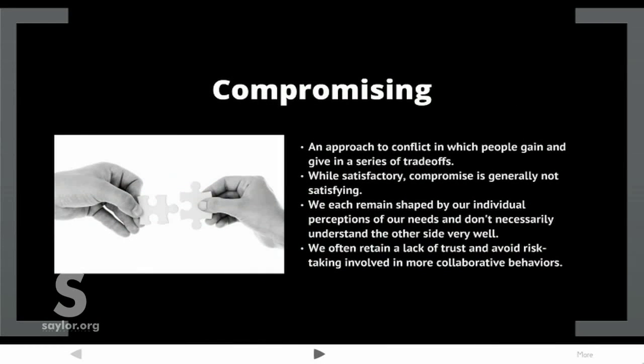Compromising is an approach to conflict in which people gain and give in a series of trade-offs. While satisfactory, compromise is generally not satisfying. We each remain shaped by our individual perceptions of our needs and don't necessarily understand the other side very well. We often retain a lack of trust and avoid the risk-taking involved in more collaborative behaviors.